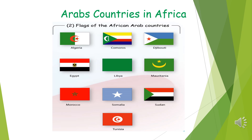The Arab countries present in Africa are Algeria, Comoros, Djibouti, Egypt, Libya, Mauritania, Morocco, Somalia, Sudan, and Tunisia.